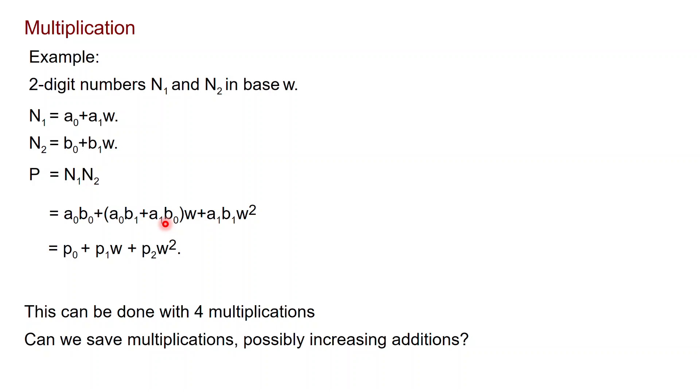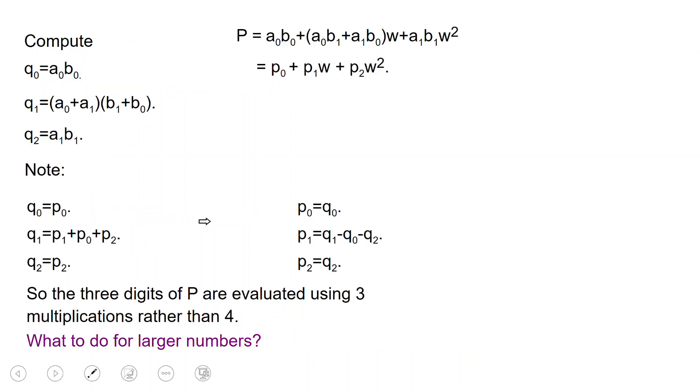Now can we save on multiplications, possibly increasing additions? Is four the least number of multiplications that we can use to multiply N1 and N2? And here is really all that's behind the Karatsuba algorithm. The answer is that yes, we can save on multiplications with a cleverer way. Here is the way.